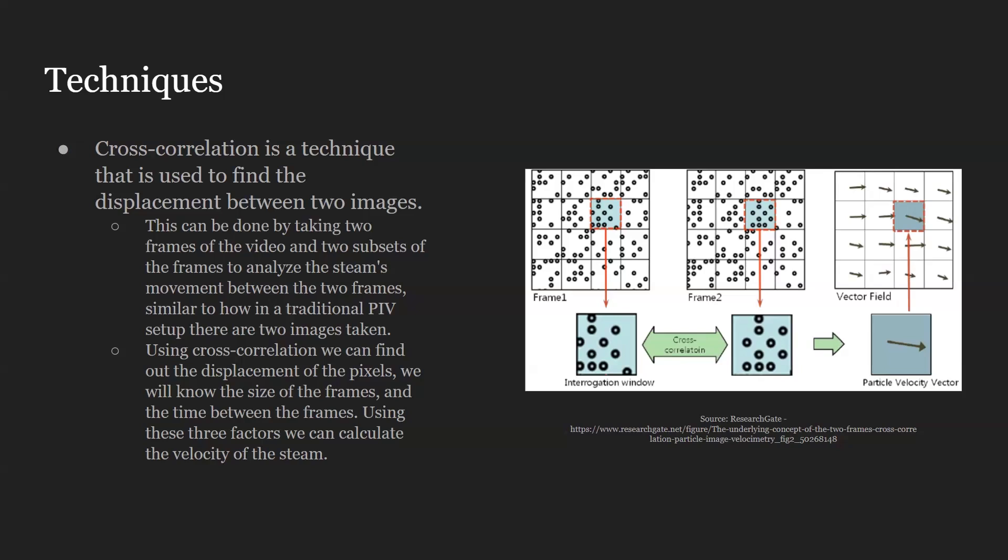In this example, we have velocity vectors, which show us in what direction the flow is going.